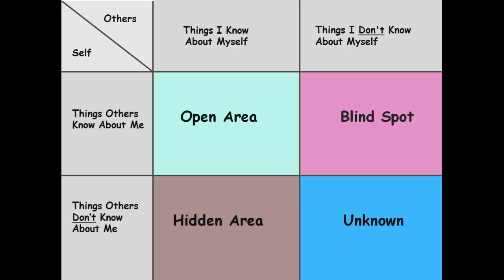The window is represented by four coloured panes of glass. First, it asks you to think about the things that you know about yourself or that others know about you — this is called the open area. For example, things I know about myself is that I'm a man and I have a northern accent.